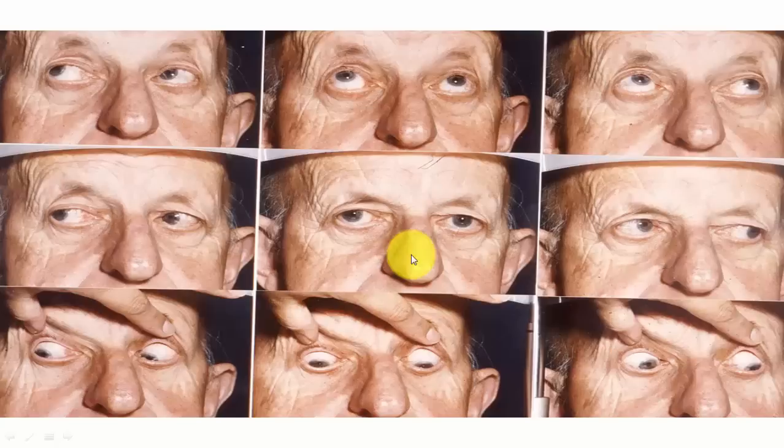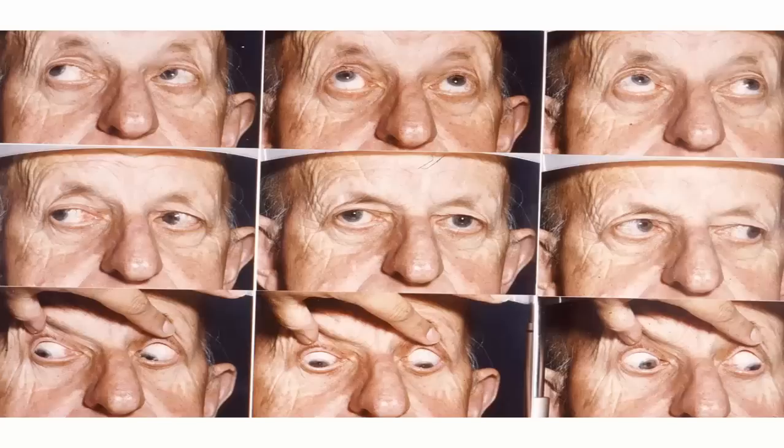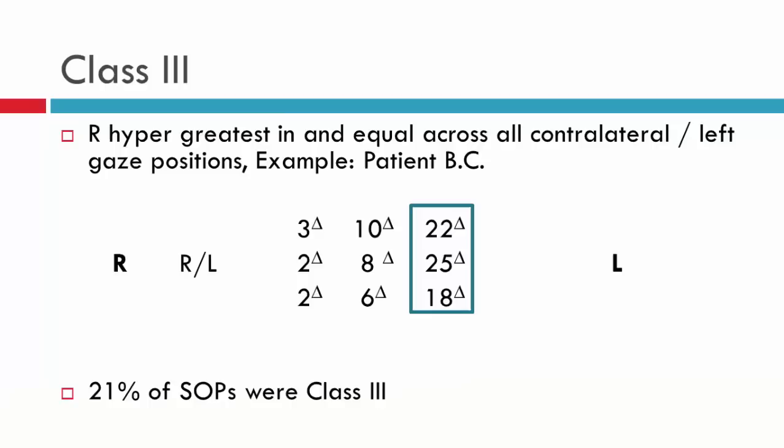Looking at a patient now, in primary position we appear to have a slight right on left and perhaps an exo deviation. As the patient looks over to left gaze, we again see the right on left. As the patient looks up, there is perhaps a mild inferior oblique overaction. And in levo depression, we can clearly see the superior oblique underaction. In this particular instance, the greatest deviation is in dextrodepression, which is why it's classified as a class two.